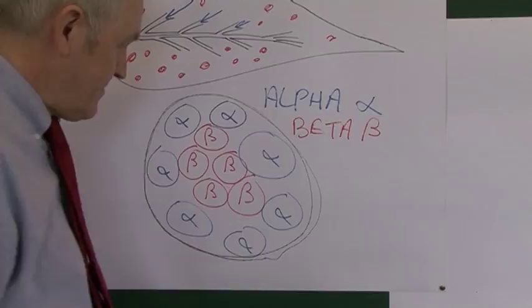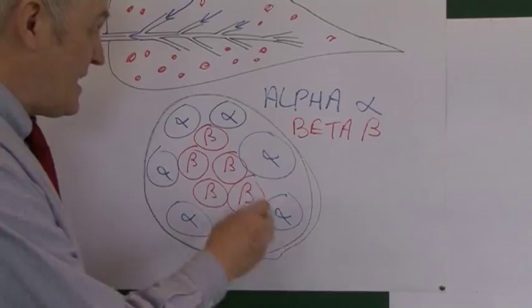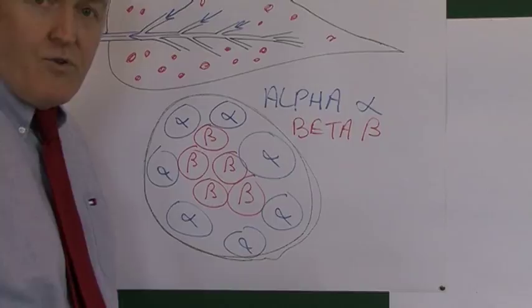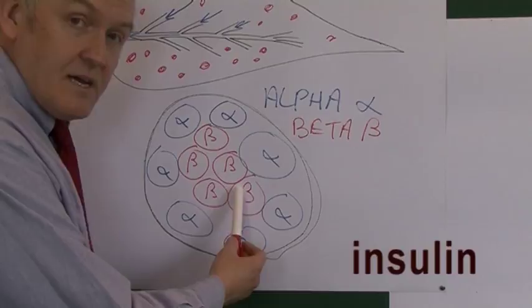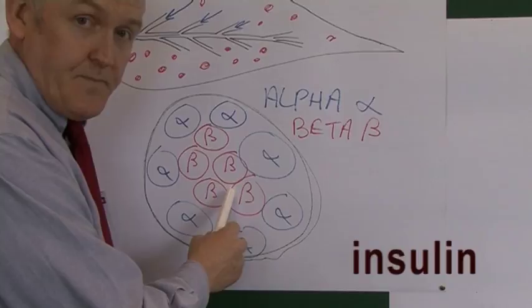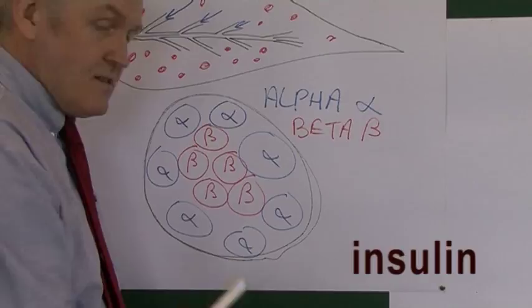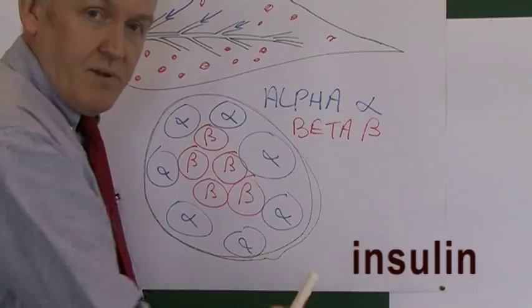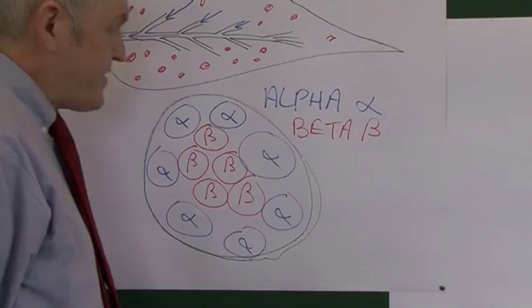If blood sugar rises, that increase in blood sugar levels is detected by the beta cells. When there's an increase in blood sugar level, they respond by producing the hormone insulin. Insulin is produced by the beta cells in response to hyperglycemic stimuli. The only cells in the body that produce insulin are these beta cells in the pancreatic islets. They are endocrine because the hormone insulin goes straight into the blood for systemic distribution.